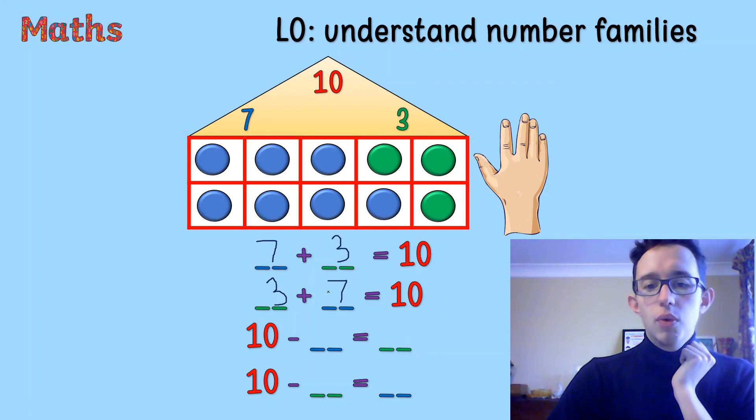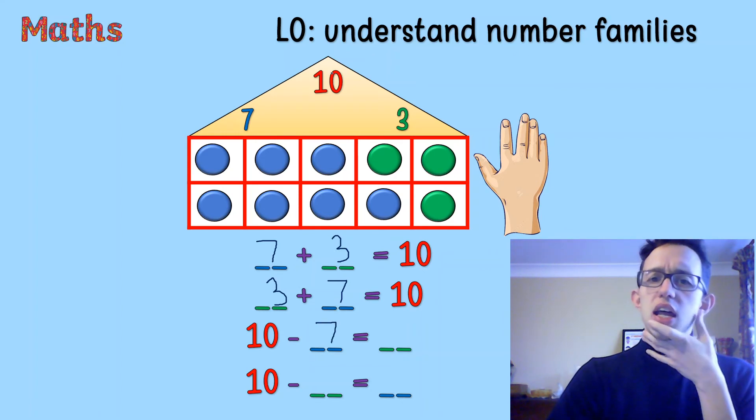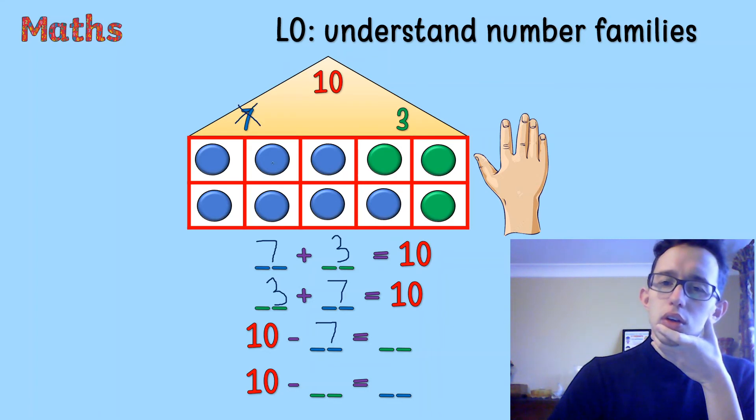10 take away 7. What would that be equal to? If we've got 10 and we take away the 7, we are left with, and we've already used a 10. 10 take away 7 equals, yeah, well done. The number that's left is the 3.